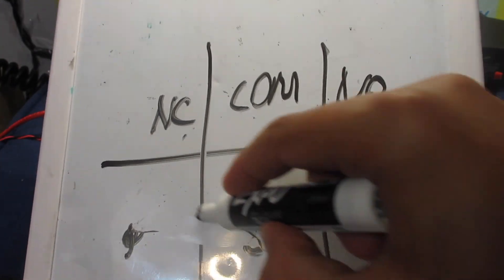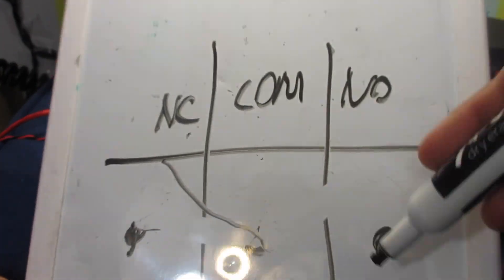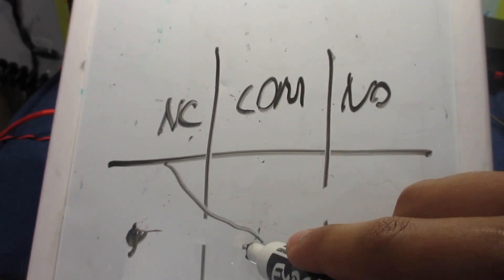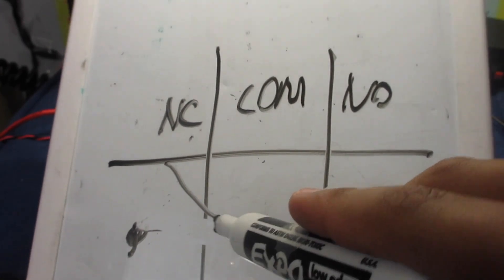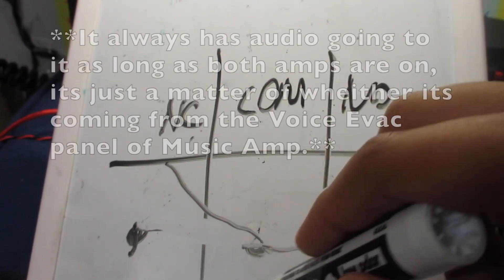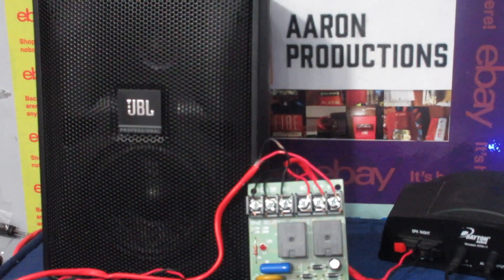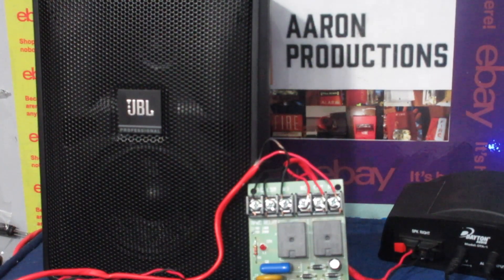But if we energize the relay, this becomes opened and the normally open becomes closed. Now see how this central terminal always has the power going to it no matter which way it is? I apologize, my video cut off there.